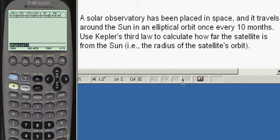And this is asking for the radius of the satellite's orbit. Given the period of 10 months, okay, I'm going to use Kepler's Third Law.